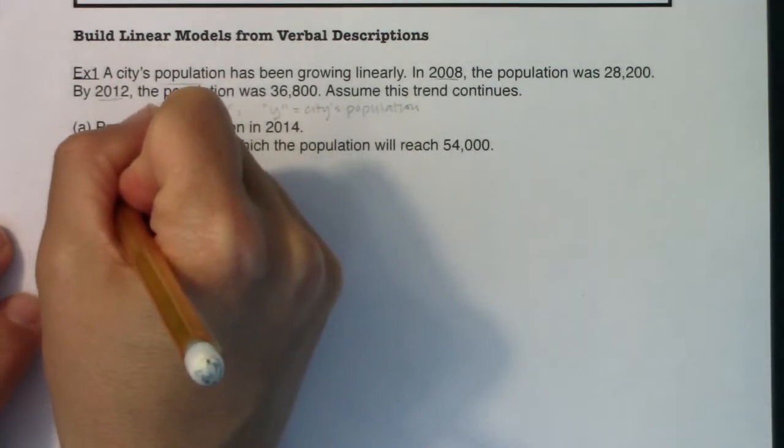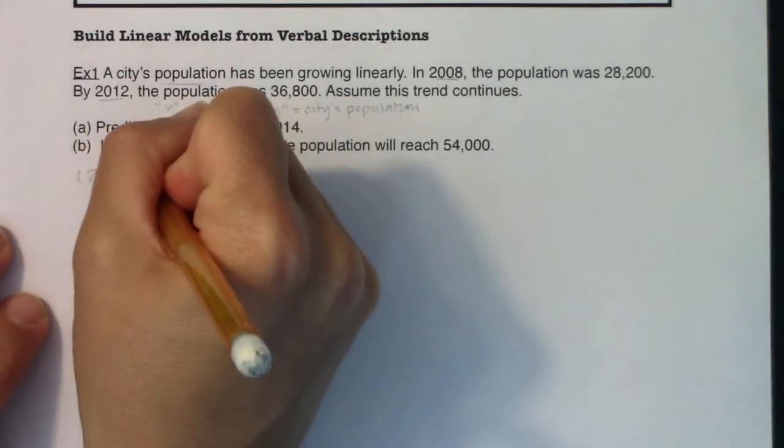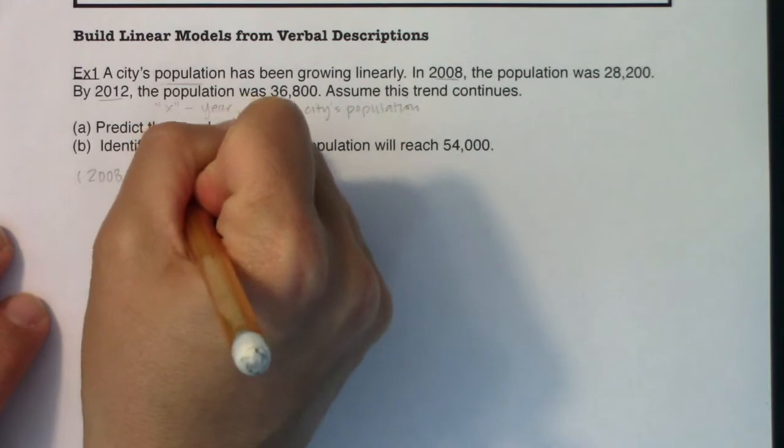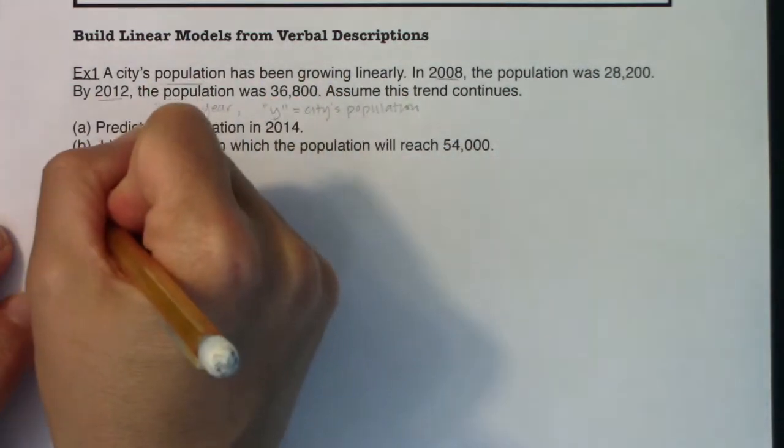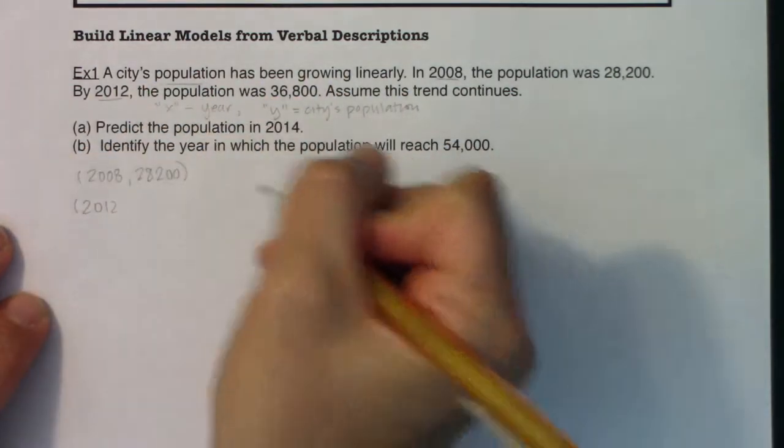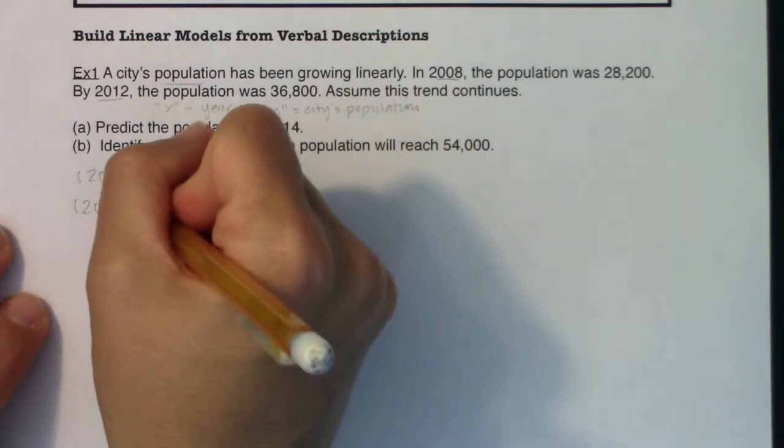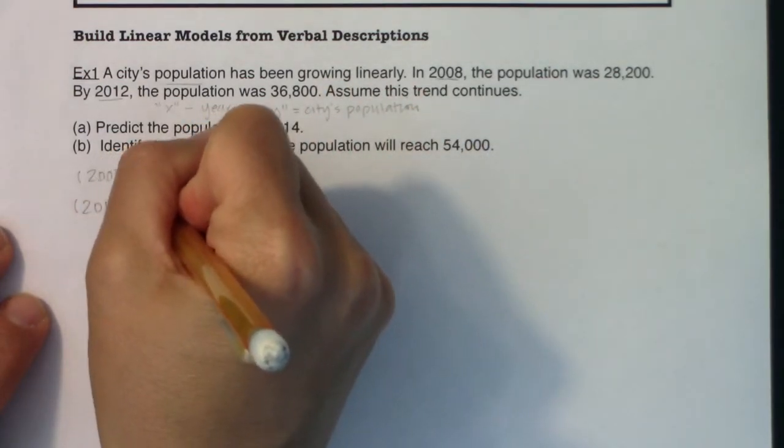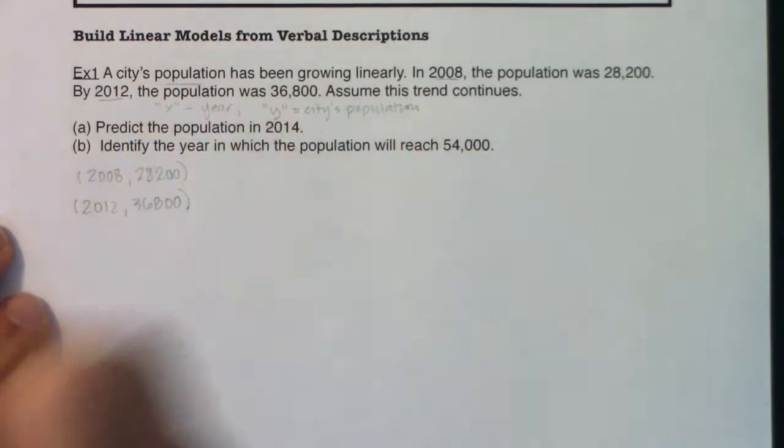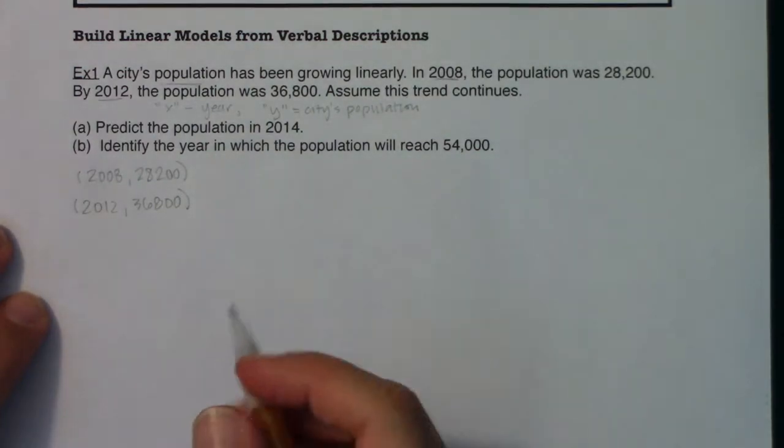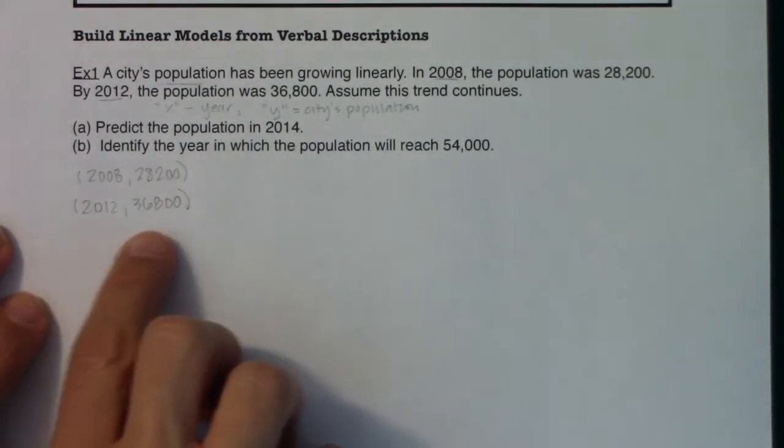So we've got 2008, 28,200, and we had 2012, and we had 36,800. Alright, so I've got my two ordered pairs. I've converted that data to two coordinate points.